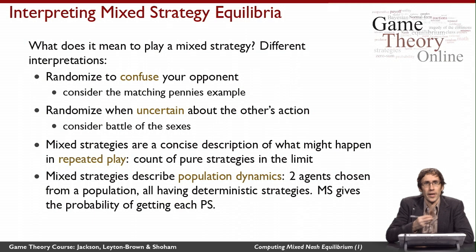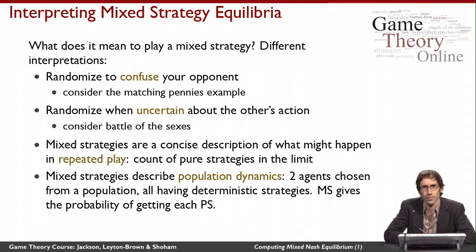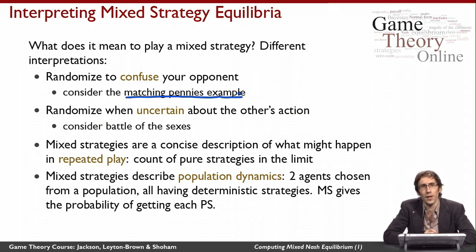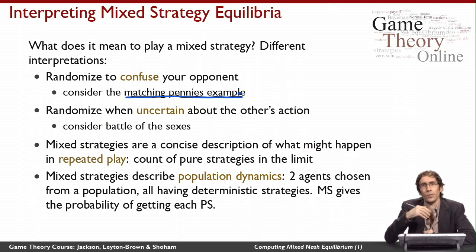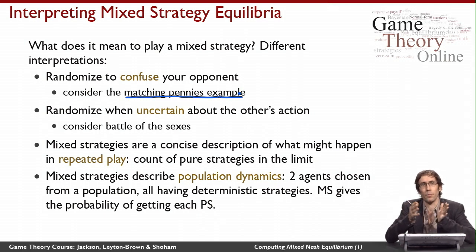The last thing to think about is what does it mean to play a mixed strategy — there are different interpretations. The first and most natural is the one at work in the matching pennies example: you randomize to confuse your opponent. In matching pennies, we each want opposite things, and the only way we can be in equilibrium is if there's some uncertainty about what I'm going to do. If you know for sure I'm playing heads, you know exactly what you'll do and it's something I don't like. So there's no pure strategy equilibrium in that game — we both have to be a bit confused about each other.